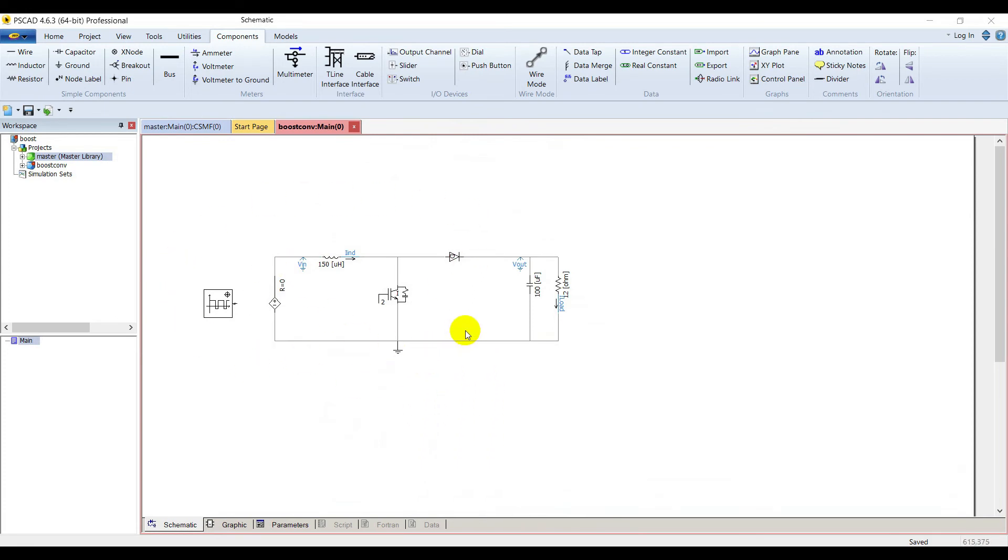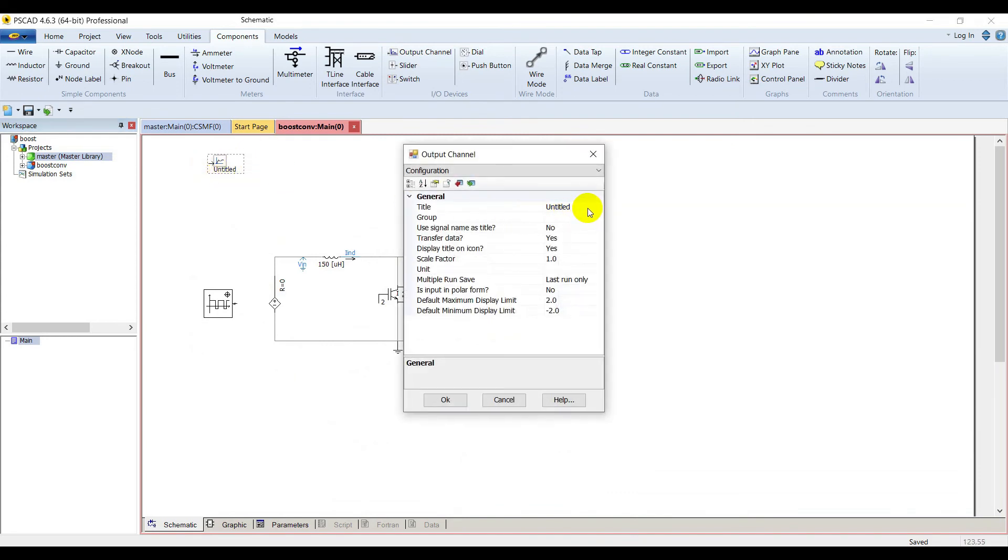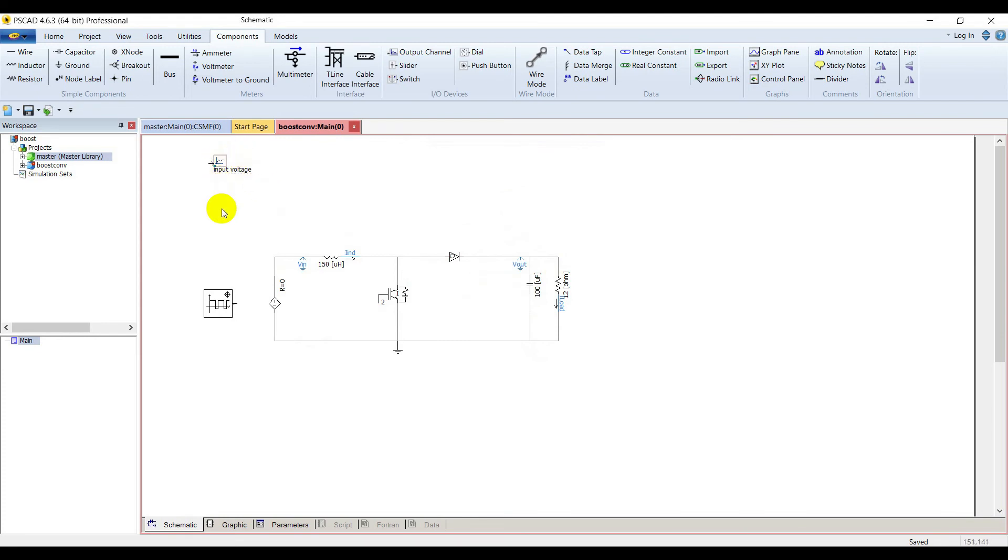We have connected everything. Now let's place output channels for all our meters. Bring an output channel, place it here. Name it input voltage and scale it by 1000 and its unit is volts.